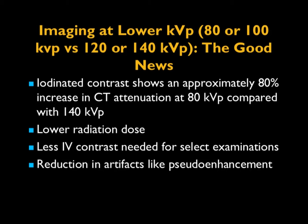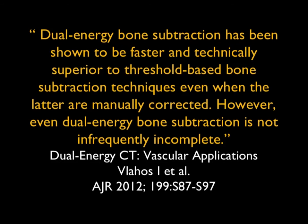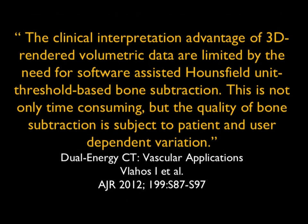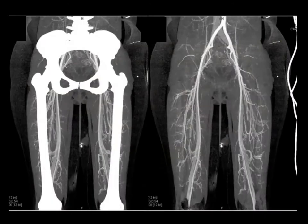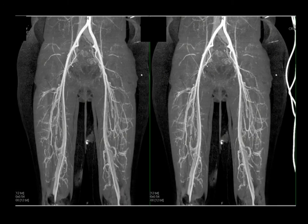Dual energy bone subtraction is faster and superior to typical threshold-based techniques. The article does make the point that you need to be careful because errors can still occur — it is better, but regardless of the technique, errors can happen. Here's just a nice example with dual energy: take away the bone and you get a beautiful example of the femorals, superficial femorals, and all of the branches, very nicely shown on those images.